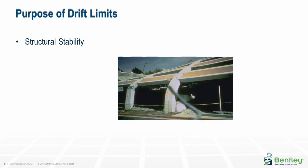For a number of reasons, it is important that excessive drifts be avoided. One reason is to maintain the stability and integrity of the structure. Excessive drift can make the structure unstable, inducing considerable forces into the members, leading to collapse. The collapse of the Northridge parking structure was caused in part by the disintegration of the short columns at the ramps that weren't capable of maintaining their strength at the drifts to which they were subjected.